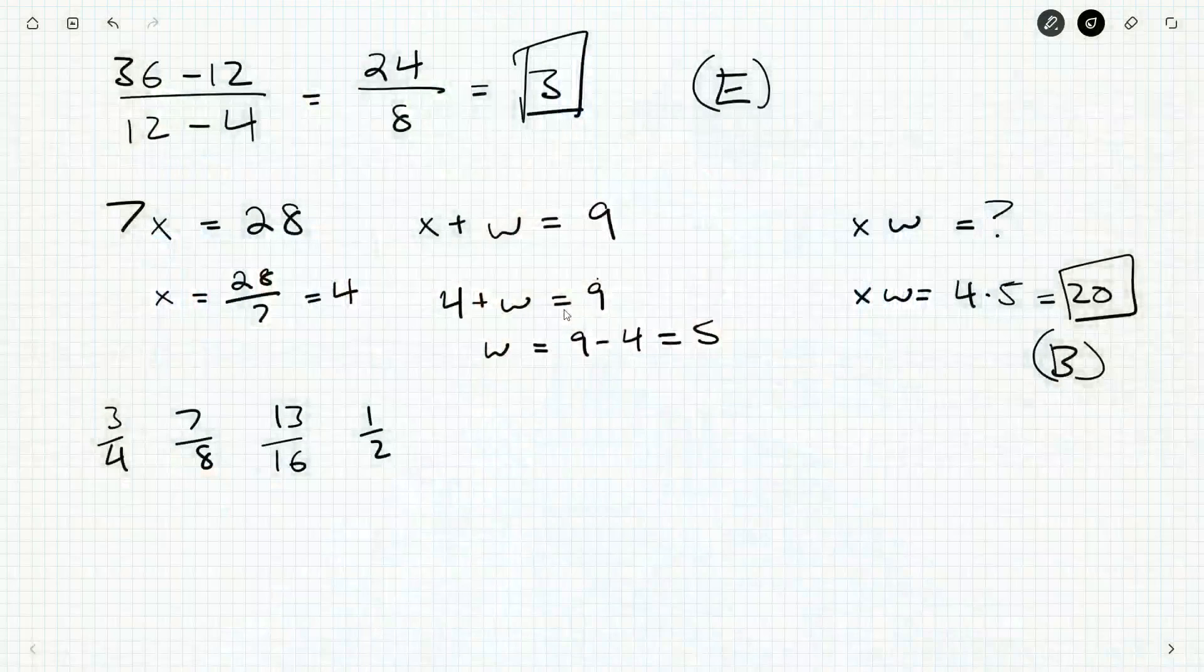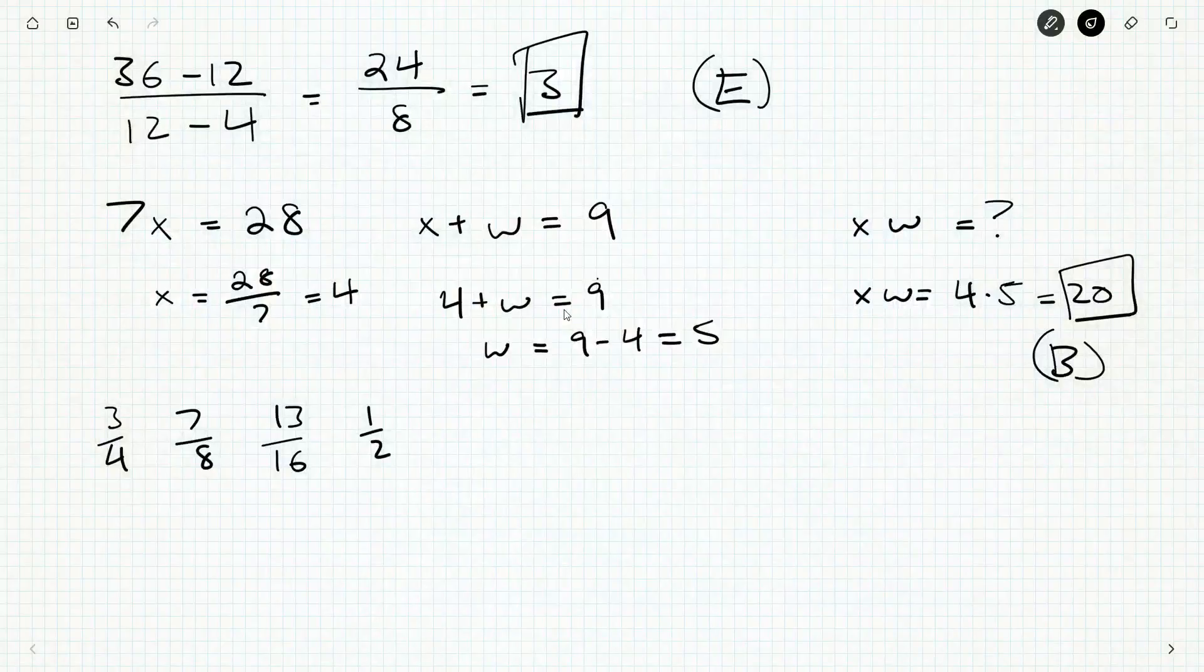Once the denominator—the bottom number—is the same, we can look at the top numbers to order them. So three out of four, multiply top and bottom by four,